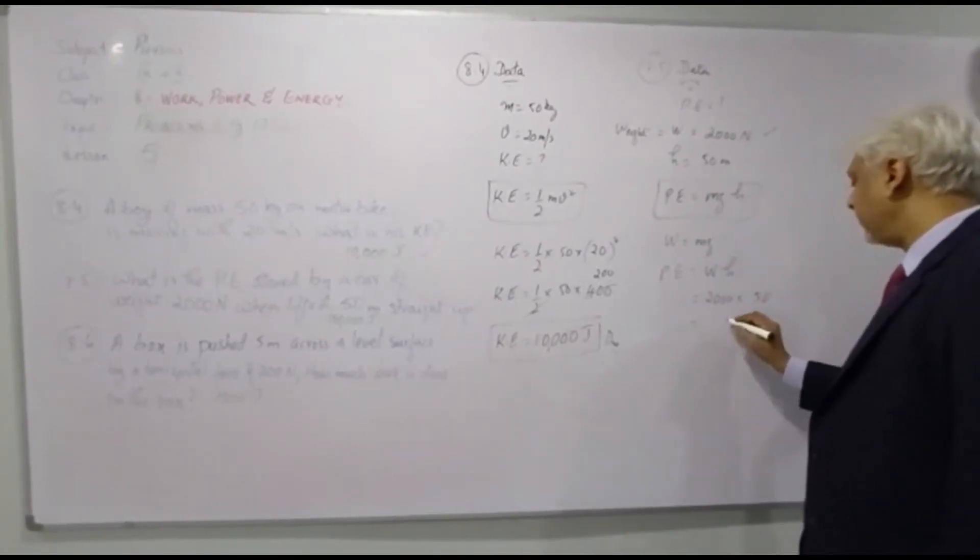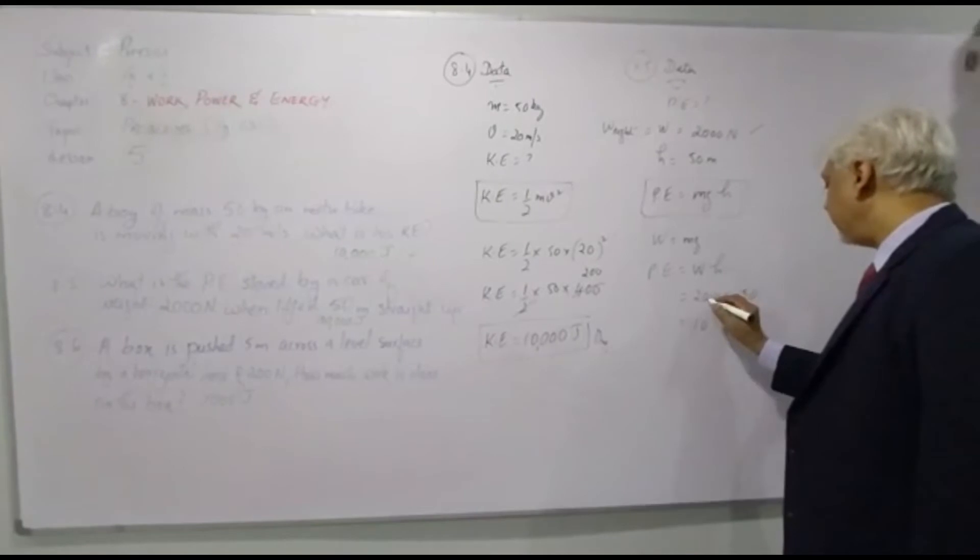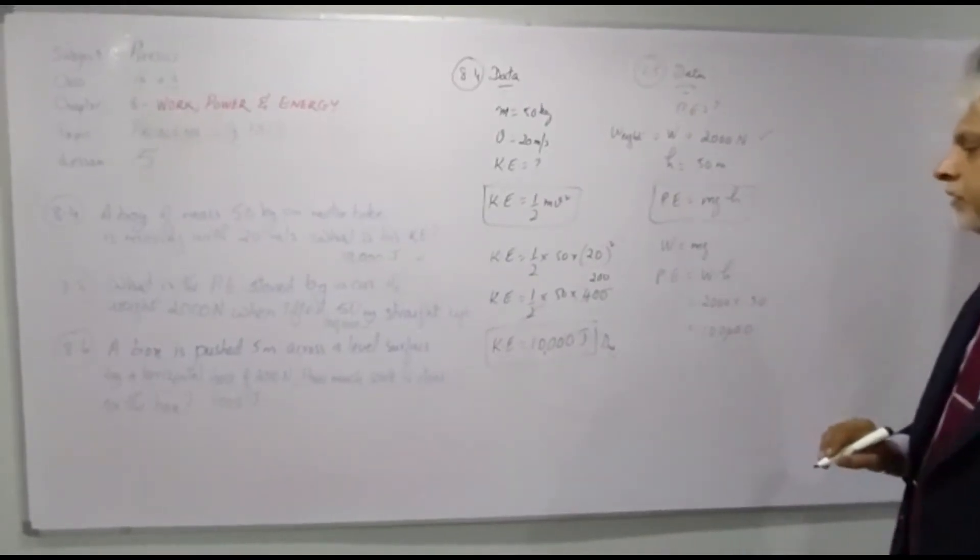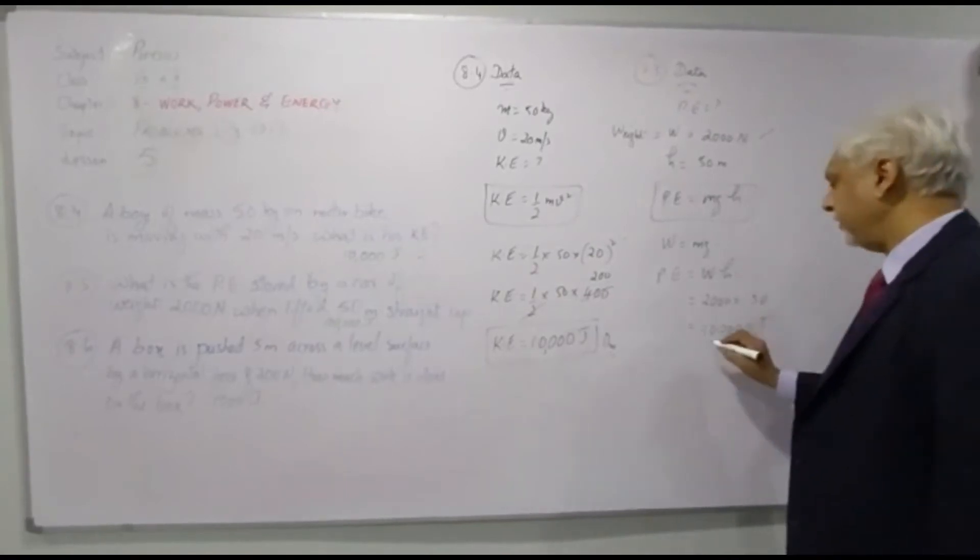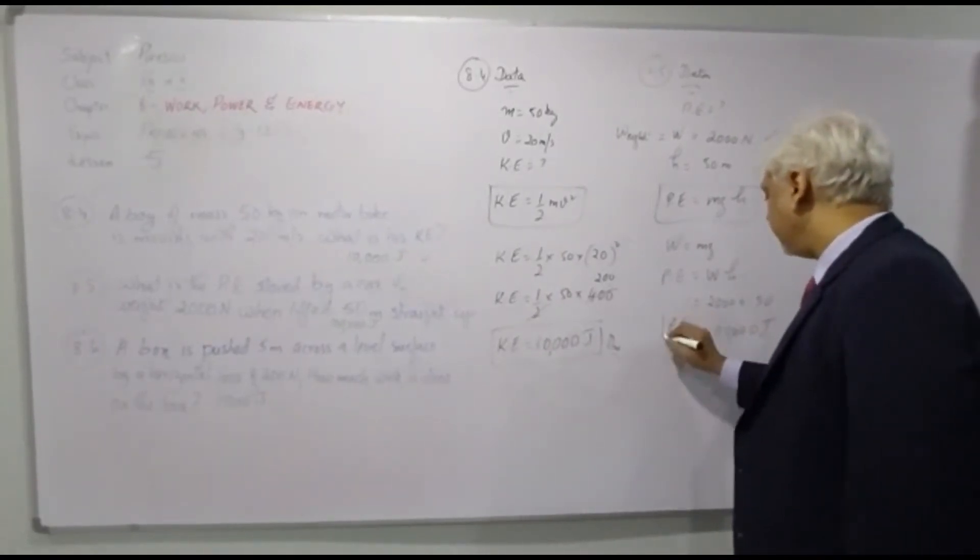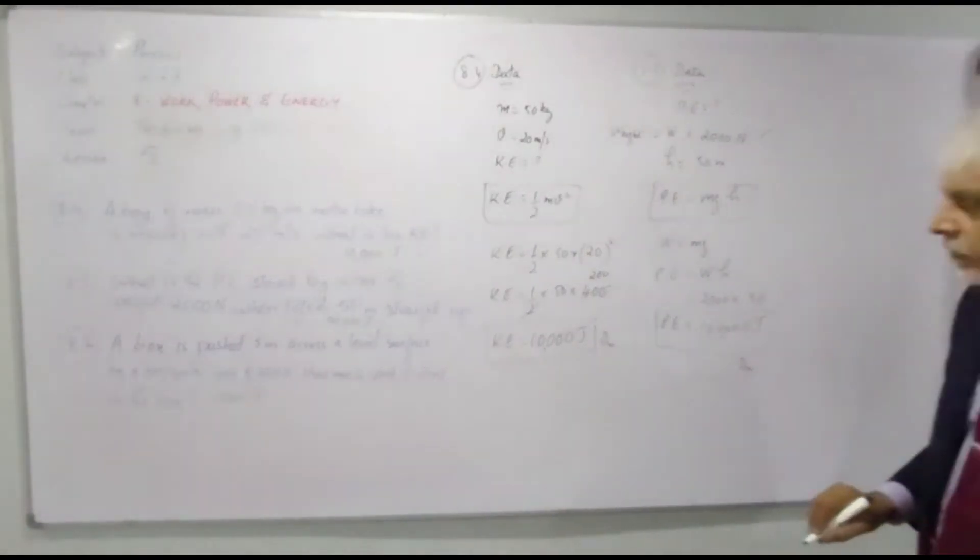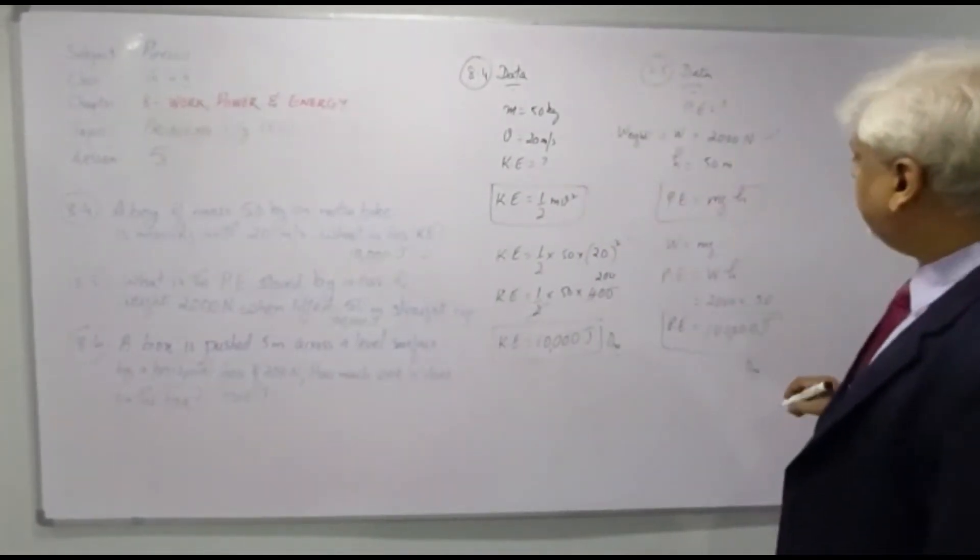When I work this out I get 1, 2, 3, 4, 1, 2, 3, 4, I get 100,000 joules, the unit of potential energy. Yes 100,000, there you go. So we got 100,000 joules.